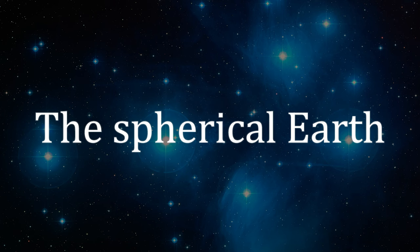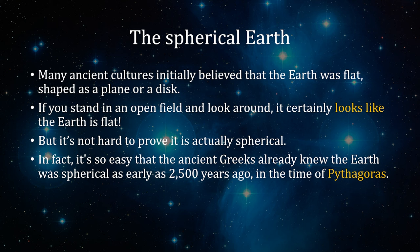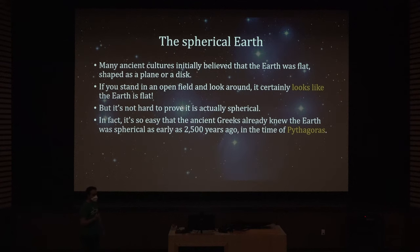Now let's talk about the spherical Earth. The Earth is a sphere — almost a perfect sphere. But many ancient cultures initially believed the Earth was flat, shaped as a plane or a disk. Of course, if you stand in an open field and look around, everything seems flat. But it's actually not hard to prove the Earth is spherical — in fact it's so easy that the ancient Greeks already knew the Earth was spherical as early as 2,500 years ago, in the time of Pythagoras.